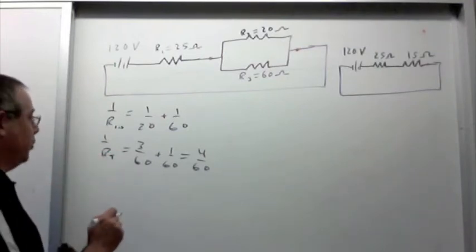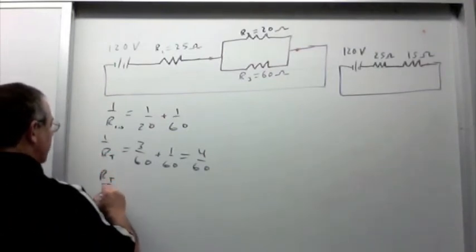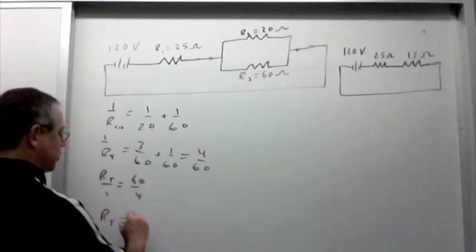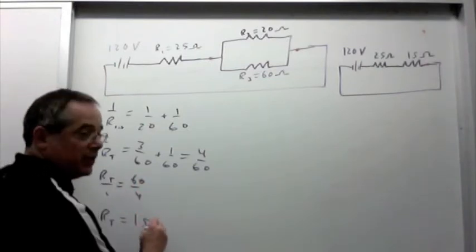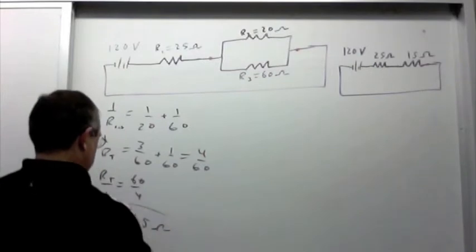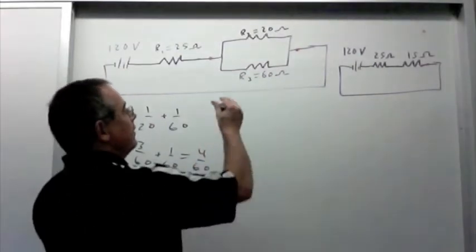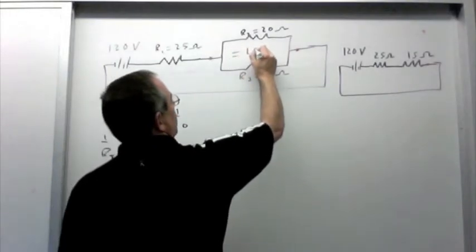So flip it to get R total. R total over 1 equals 60 over 4. R total equals 15 ohms. That's the parallel section. So I'm going to write R total equals 15 ohms in there.